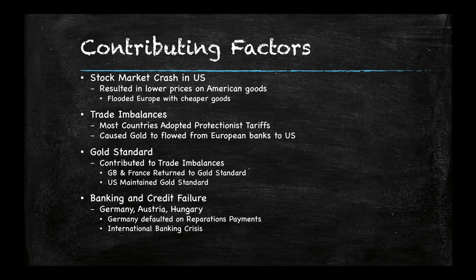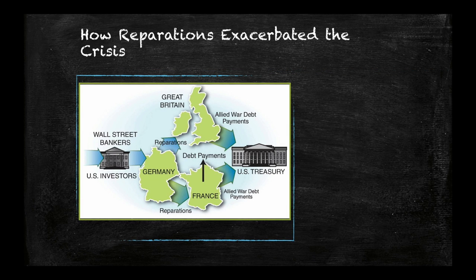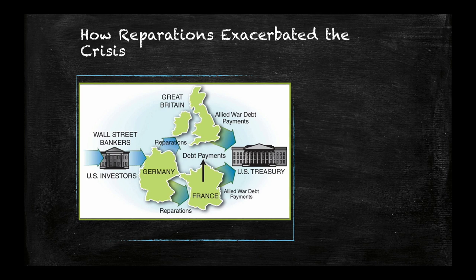There was also a problem with international banking and credit. Places like Germany, Austria, and Hungary, shouldered with the burden of reparations from World War I, weren't able to make payments, and so they defaulted, causing an international banking crisis. As you can see from this illustration, Germany was paying reparations to France, which was paying back the U.S. Treasury for loans during the war. Germany was also paying Great Britain reparations, which was also using that to pay the United States Treasury. On the other hand, Wall Street bankers and investors were pouring money into Germany. When Germany stopped paying reparations, this circle — almost like borrowing from Peter to pay Paul — fell apart, hurting the international banking and credit establishment.